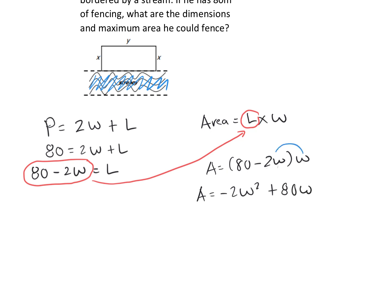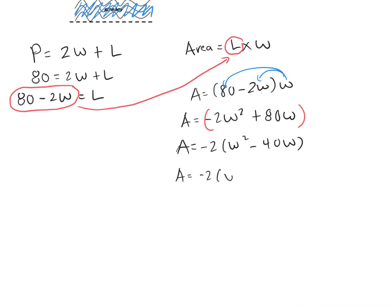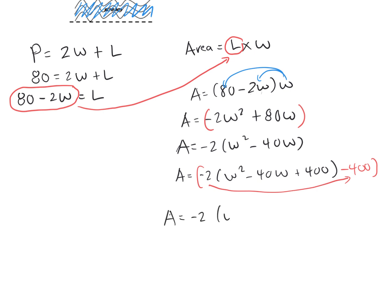Multiplying W times negative 2W and W times 80 gives us minus 2W squared plus 80W. To complete the square, factor out the coefficient of negative 2, so we get negative 2 times (W squared minus 40W). Take half of 40, which is 20, and 20 squared is 400. We add 400 inside the bracket to complete the square and subtract 400 so we don't change the value. Don't forget to multiply: negative 2 times negative 400 is positive 800, giving vertex form: negative 2 times (W minus 20) squared minus 800.